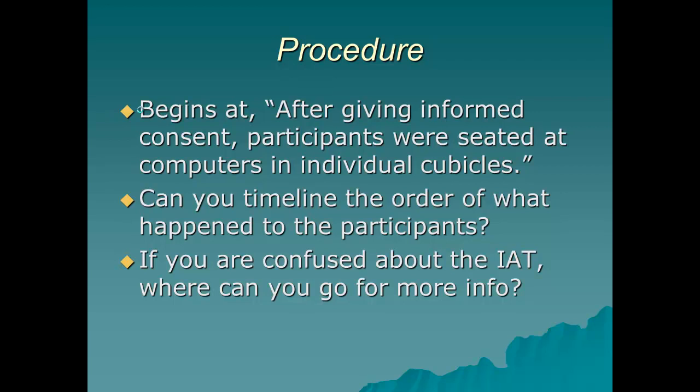So those are the three sections. Take a look at the procedure section, which begins with: 'After giving informed consent, participants were seated at computers and cubicles.' Based on what the researchers did, can you create a timeline of what happened to the participants? You should stop now and go back and do that. Also, if you're confused about what the IAT is, you can go to a research article that they cited to get more information about it.